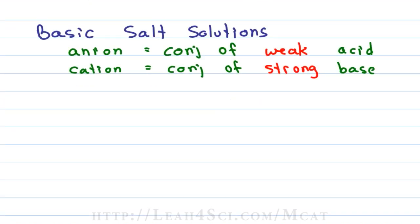Basic solutions are the exact opposite. If the cation in the basic solution is the conjugate of a strong base, that means it's going to give you a weak conjugate acid or a weak positive ion for the cation, that will not be reactive in solution. And if the anion is the conjugate of a weak acid, well then the conjugate of a weak acid is reactive in solution and it will be basic in solution.